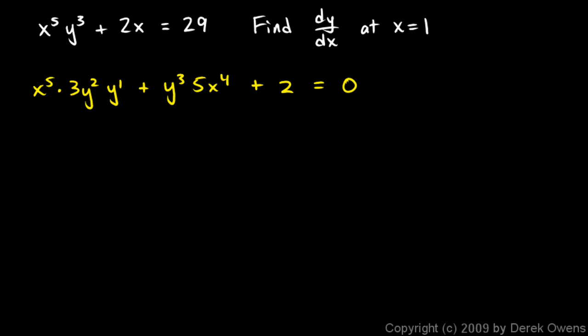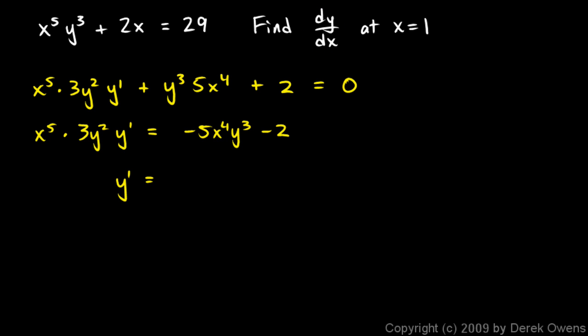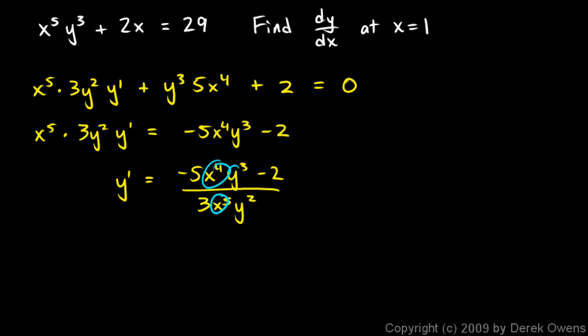Not too bad. We just need to do a little algebra and solve for y prime. Putting all the other terms on the other side: x to the fifth times 3y squared times y prime equals negative 5x to the fourth y cubed minus 2. Then dividing both sides to isolate y prime gives: y prime equals negative 5x to the fourth y cubed minus 2, over 3x to the fifth y squared. None of these simplify because of the minus 2, so we leave it like that.